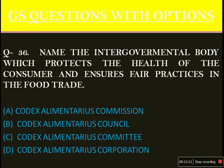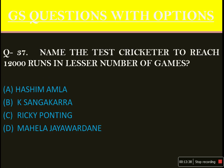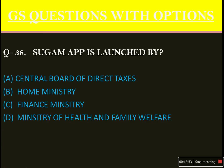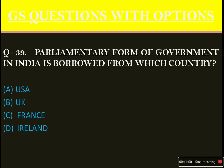Name the intergovernmental body which protects the health of the consumer and ensures fair practices in the food trade. The options were very similar: Codex Alimentarius Commission, Codex Alimentarius Council, Codex Alimentarius Committee, Codex Alimentarius Corporation. The answer is option A: Codex Alimentarius Commission. Very confusing question. Name the test cricketer to reach 12,000 runs in the fewest number of games. The answer is Sri Lankan great Kumar Sangakkara, option B. SUGAM app is launched by — straightforward question, option A: Central Board of Direct Taxes. Parliamentary form of government in India is borrowed from which country? Very easy — option B, that is the UK.